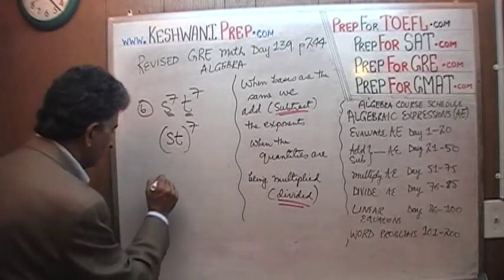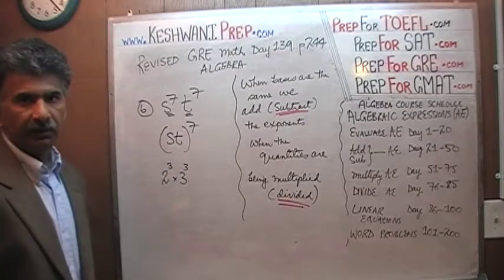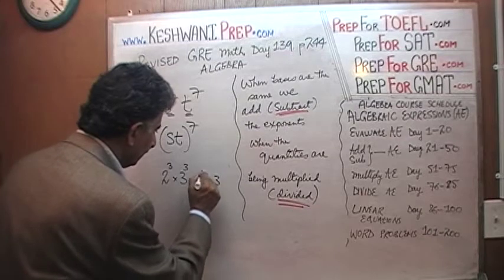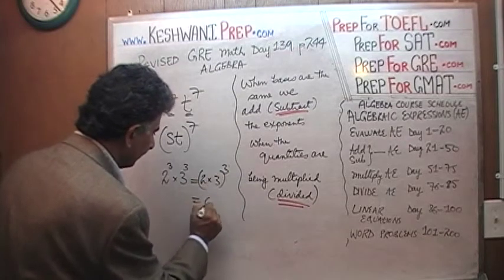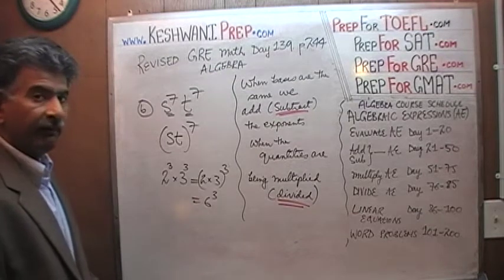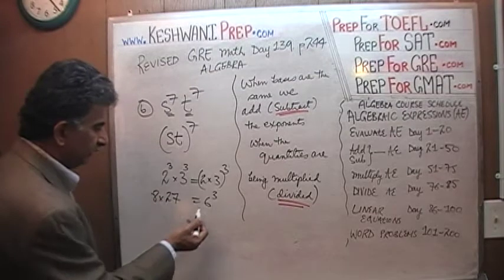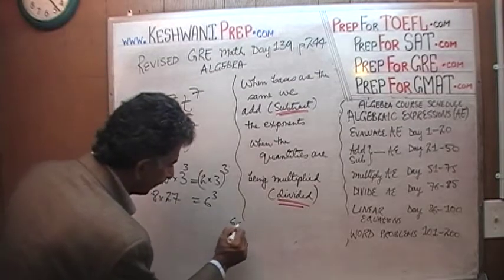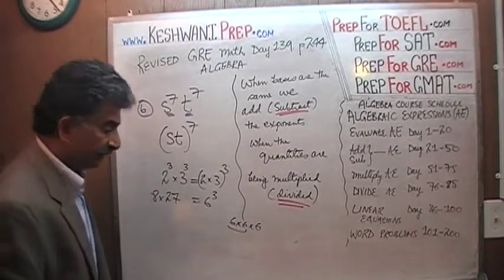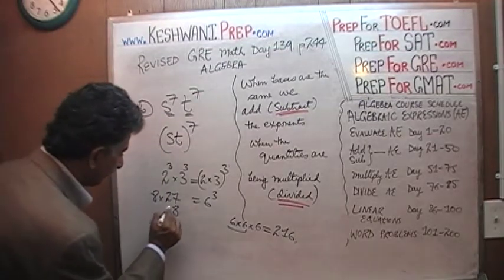For example, 2 raised to 3 times 3 raised to 3 — there is nothing we can do with it. It is simply 2 times 3 raised to 3, or 6 raised to 3. You can verify this yourself: multiply 8 times 27 and you will see that is the same as 6 times 6 times 6. 6 times 6 is 36 and 36 times 6 is 216.